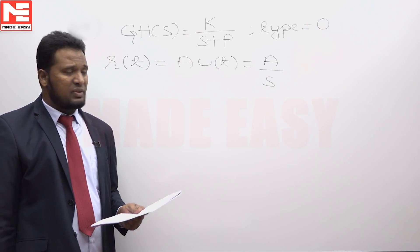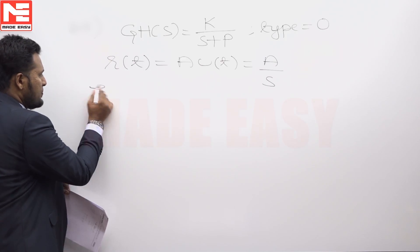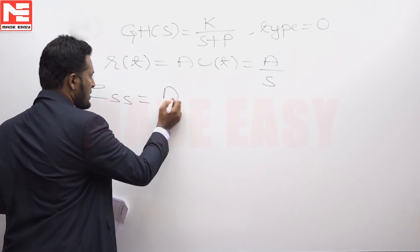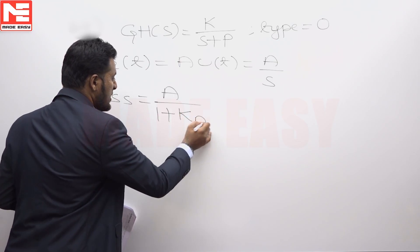Steady state error of a type 0 system for step input is A upon 1 plus K_P.